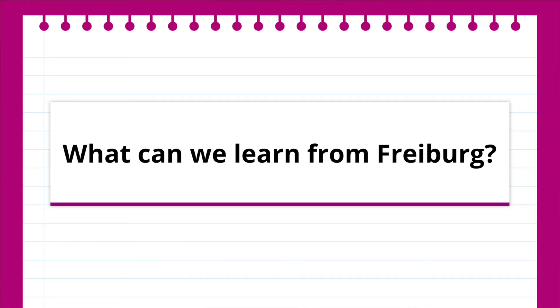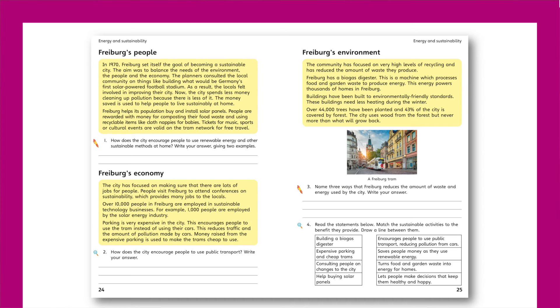The fifth lesson asks: what can we learn from Freiburg? Turning pupils' attention to a European case study, pupils will learn about the German city of Freiburg and how it has also made the decision to be a more sustainable city since the 1970s. Pupils will learn about the city's biogas digester which converts food and garden waste into energy. They'll also learn about the decision to make parking very expensive and public transport like trams very cheap, to nudge people to make more sustainable choices.